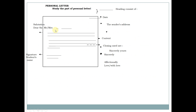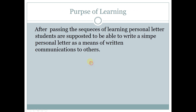This is the personal letter body and structure. For the form of a personal letter, first there is the Heading, which consists of City and who sends the letter, and Date. Followed by Salutation, then the Sender Address, then Content. You can look at this picture. We continue for the next purpose of learning.